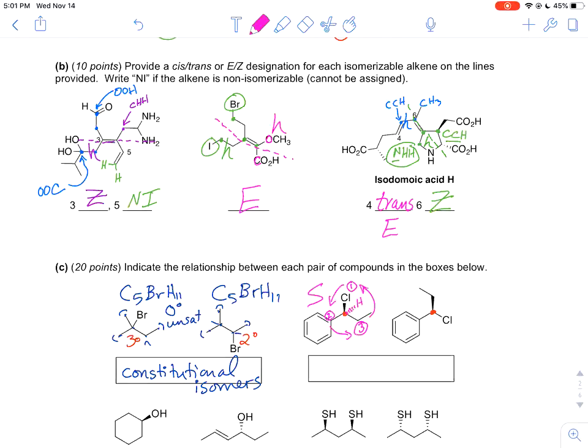We're looking at it in the correct way because the hydrogen is facing back. So if we count the circle, it goes counterclockwise. This is an S center. On the other one, same prioritization rules. So we can just add those in one for chlorine, two for the benzene ring, three for the ethyl group. We're counting around clockwise. Now this is an R stereocenter. So these are non-superimposable mirror images, also known as enantiomers.